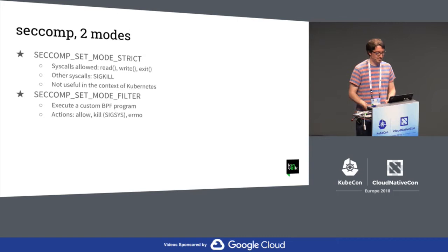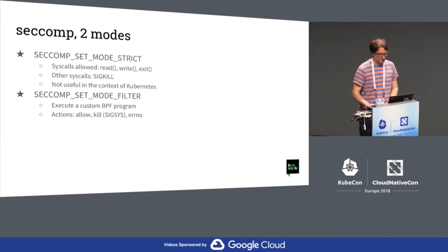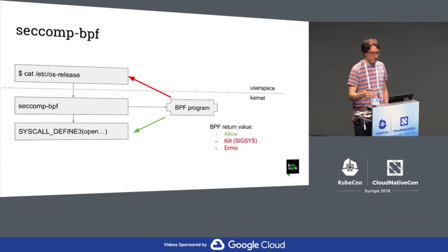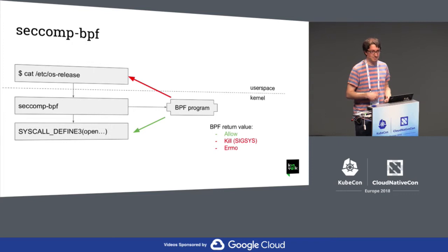For Kubernetes we prefer the other mode, which is filter mode, where we can actually install a custom BPF program and decide exactly what system call to accept and which one to deny. From that we can do different actions: allow the system call, kill the process, or return an error depending on the system call. When the application does the system call, seccomp will execute the BPF program and return one of the possible actions. If it is to allow, then it will continue to the execution of the system call in the kernel, or otherwise it will kill the program or return an error.